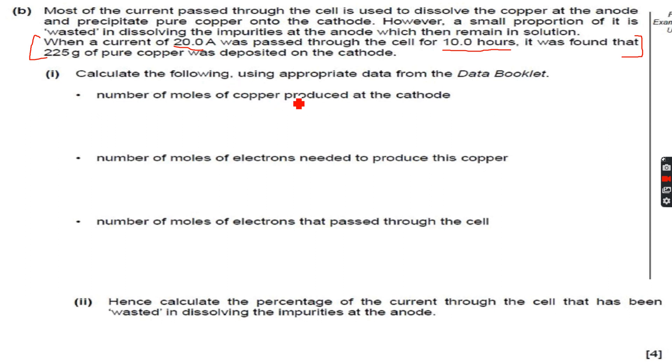Calculate the following using appropriate data from the data booklet. Number of moles of copper produced at the cathode. We know that n equals m over Ar, which is the mass produced over the atomic mass. The mass produced is 225, the atomic mass of copper is 63.5. When we calculate this I get 3.54 moles to three significant figures.